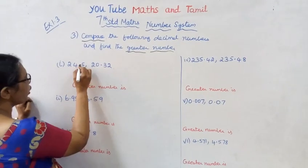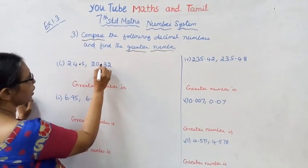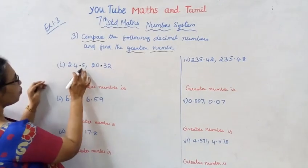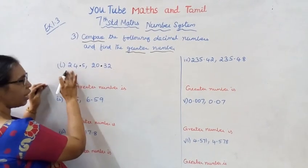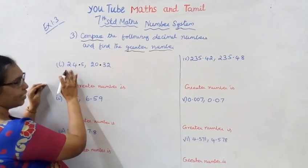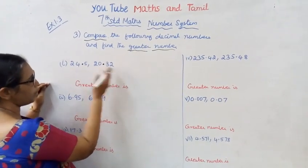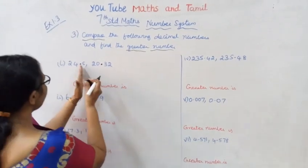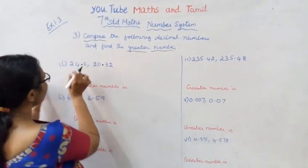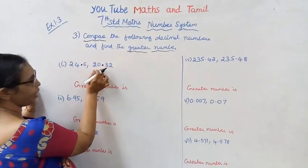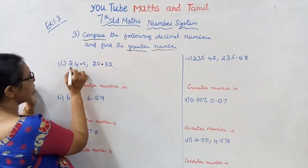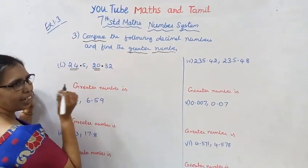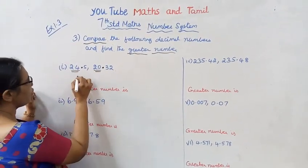It is 24 point, it is 20 point. Compare the numbers before the point — on the left side of the decimal point. We have 24 and 20. Since 24 is bigger than 20, 24 is greater.